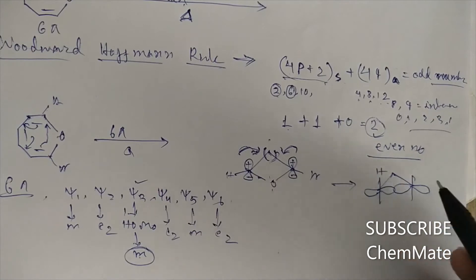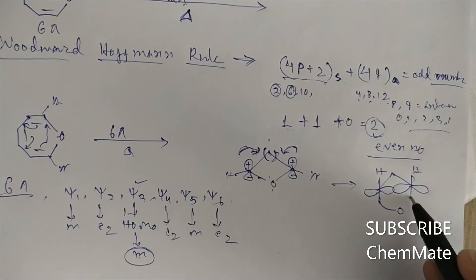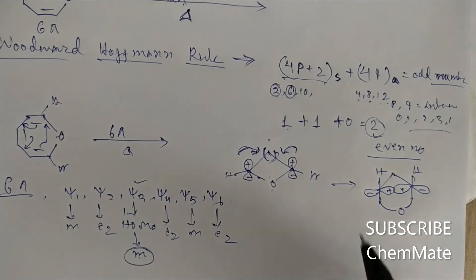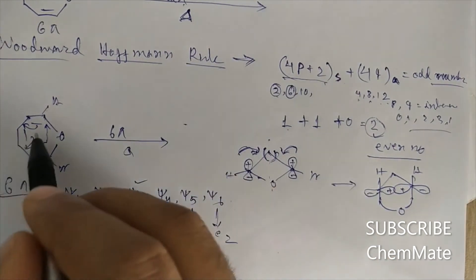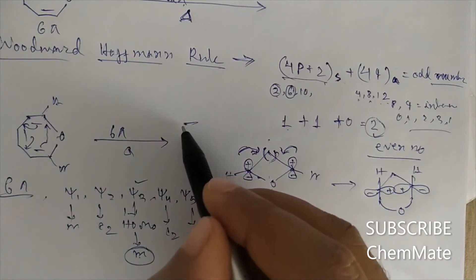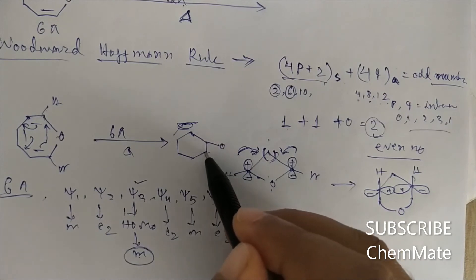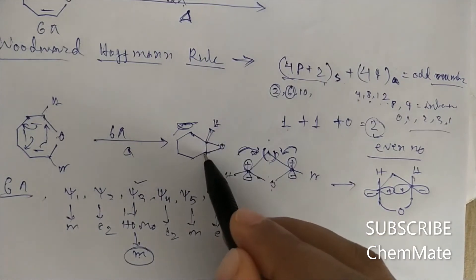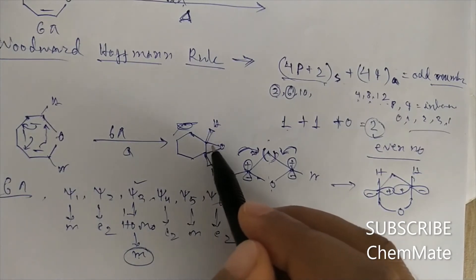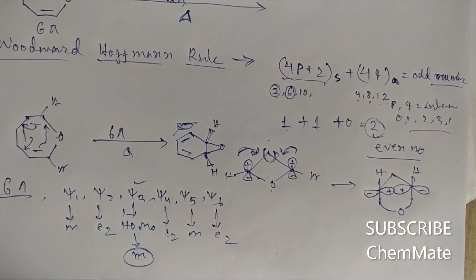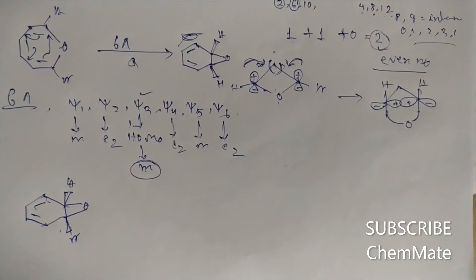The hydrogen will go above and the hydrogen will go above, and here will be the oxygen. So the final product will be a six-membered ring. It will be a six-membered ring with hydrogens above the plane and the epoxide below the plane. The 6π electron system becomes a 4π electron system in the product.